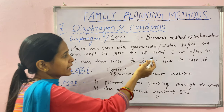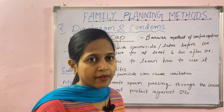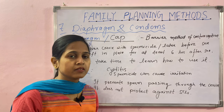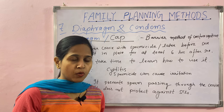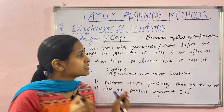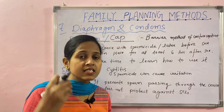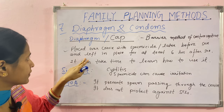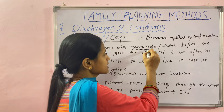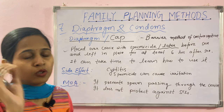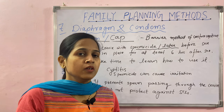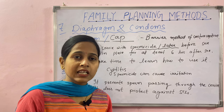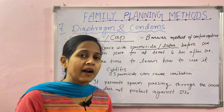The diaphragm is placed over the cervix with a spermicide-coated side before sex, and left in place for at least six hours after sex. The cap is placed on top of the diaphragm. Spermicides or latex are materials that kill sperm and help the diaphragm be more effective.